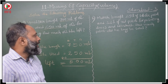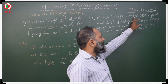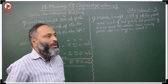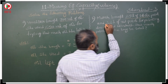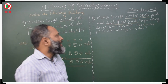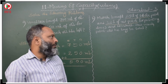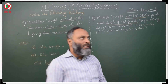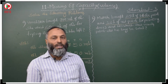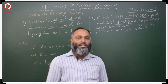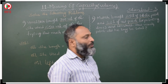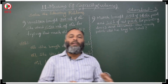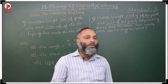Next question: Mukesh bought 25 liters of white paint and 32 liters of red paint for painting doors and windows. How much paint did he buy in total? Total means we have to add. White paint = 25 liters, red paint = 32 liters. Adding them gives the total quantity of paint he bought.